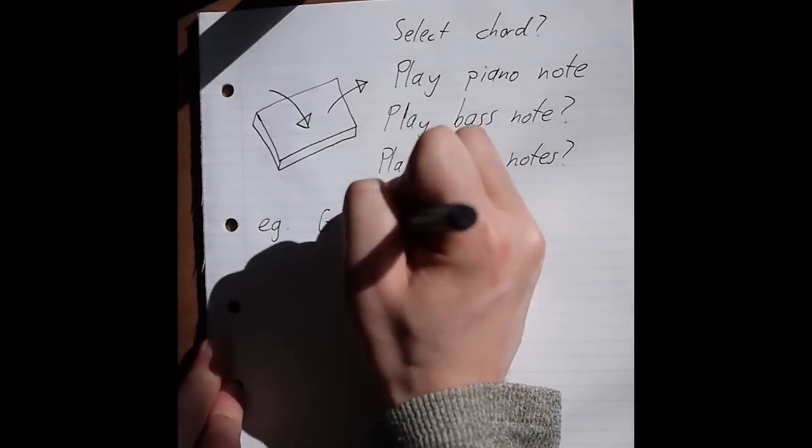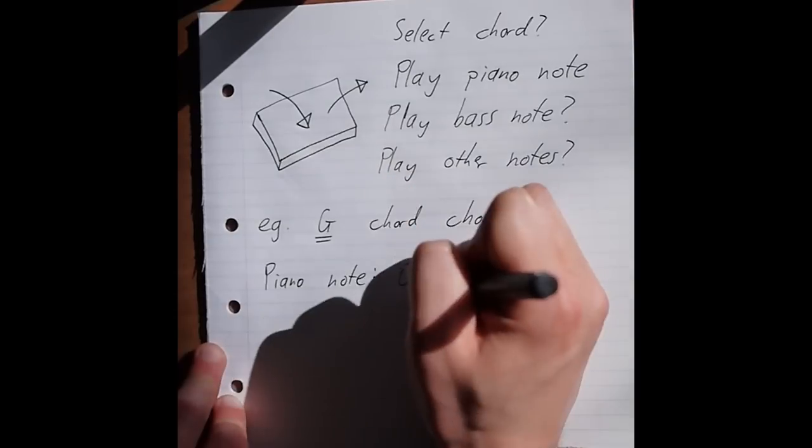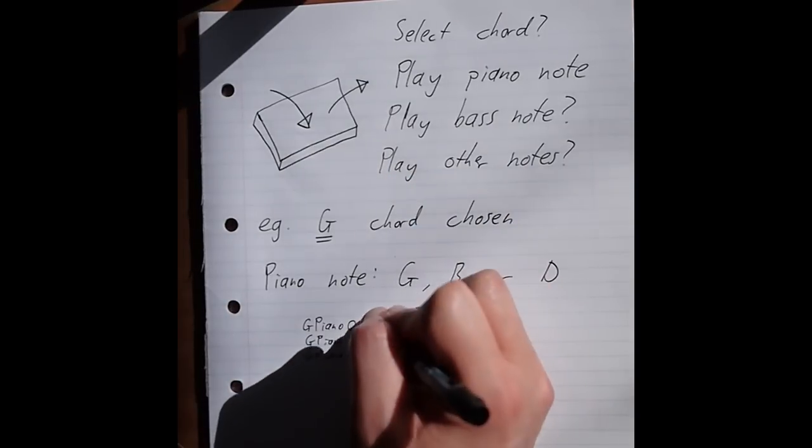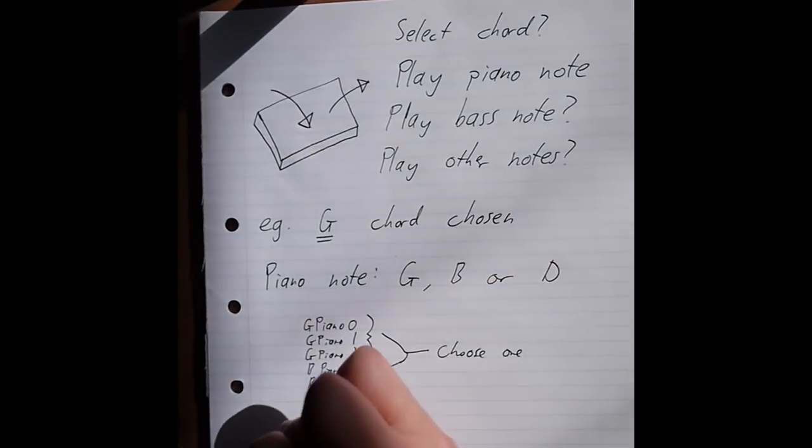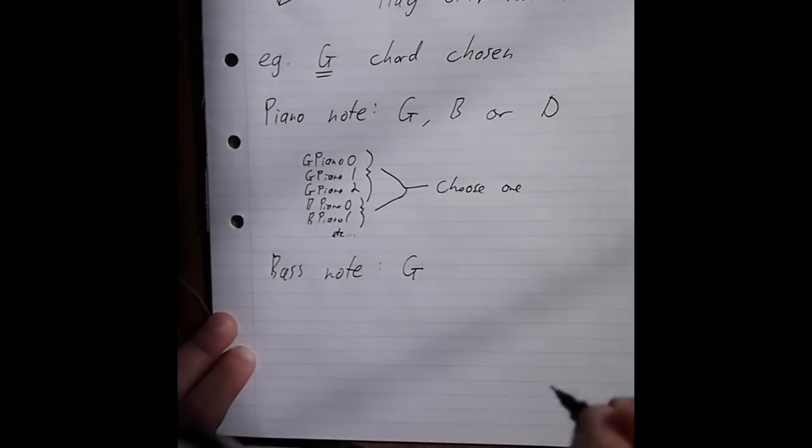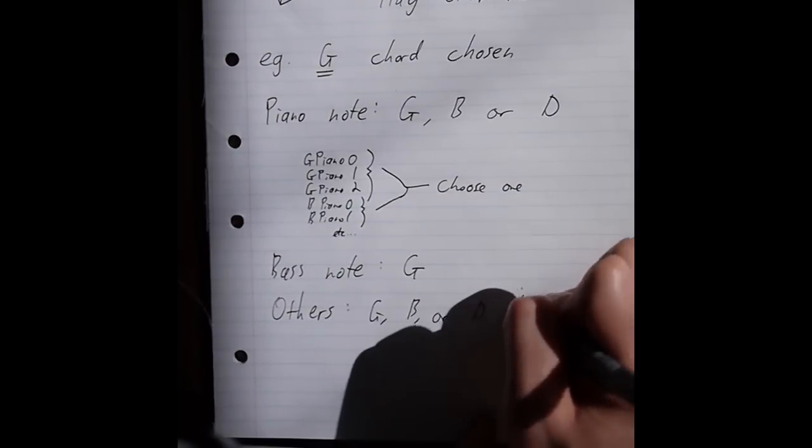Then it'll also play any number of samples from the main sample bank that match the current chord. It's basically random, but it's constrained to a range, so it might be 0-2 sounds at the start, and 4-16 at the end.